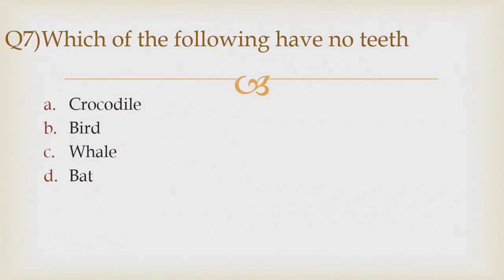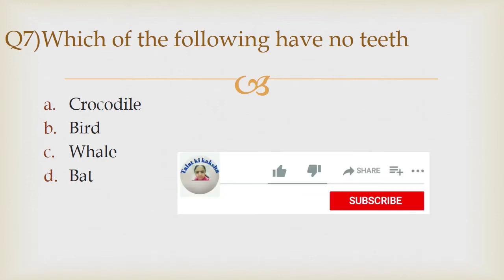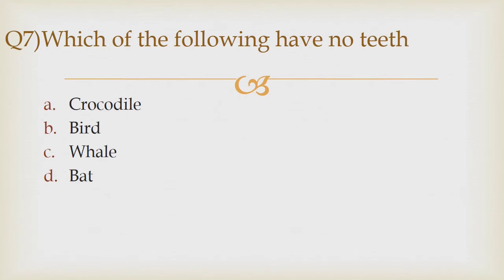Question 7: Which of the following have no teeth? Option A crocodile, option B bird, option C whale, option D bat. The correct answer is option B bird.